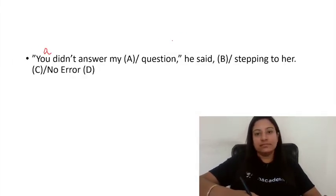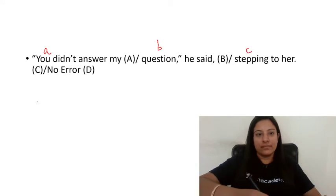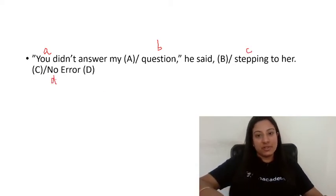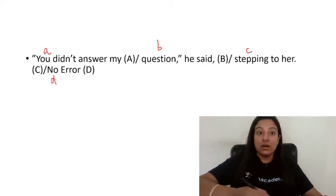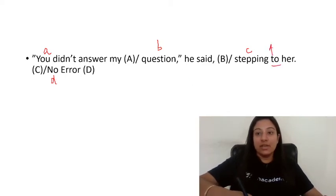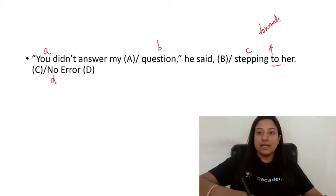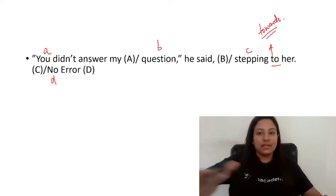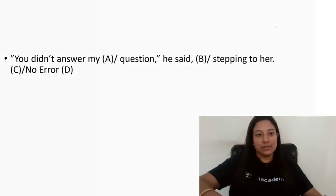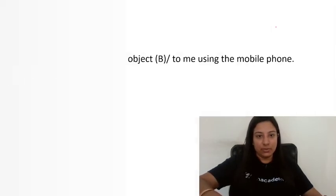Next: 'You didn't answer my question,' he said, stepping to her. You step towards someone, not to someone. So 'towards' will be used here. He is moving in her direction, so 'stepping towards her' is correct.